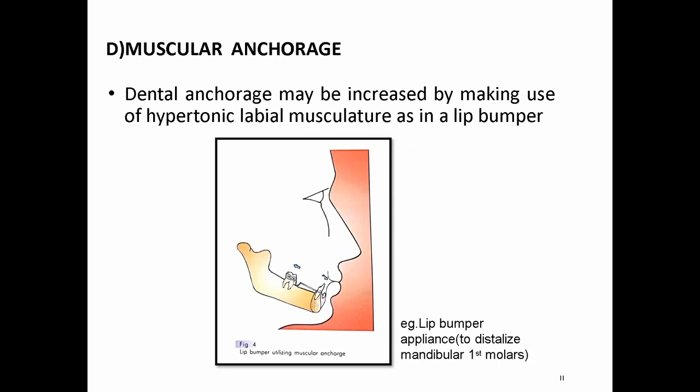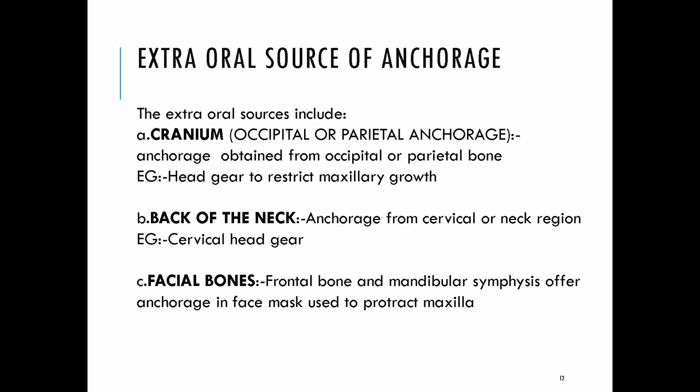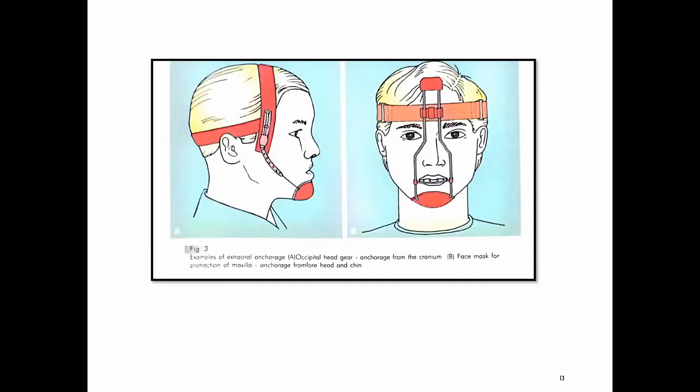Muscular anchorage is obtained from hypertonic muscles. For example, in the case of a hypertonic labial muscle, a lip bumper can use that force as anchorage to distalize the mandibular molars. External sources of anchorage include the cranium, the back of the neck, and the facial bones. The occipital and parietal regions are used with headgear to restrict maxillary growth. A face mask takes anchorage from the frontal bone and the chin for protraction of the maxilla.